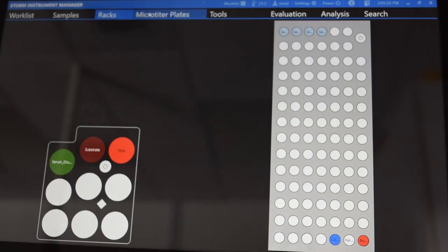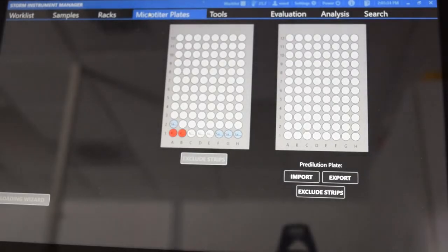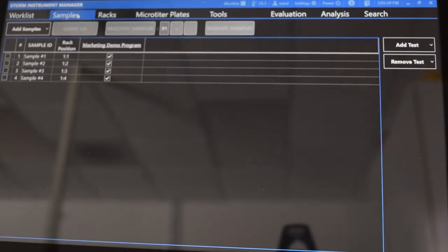Programs for all VMRD assays will be installed on the computer and ready to use. To run a program, simply select the test to be performed from the sample tab.